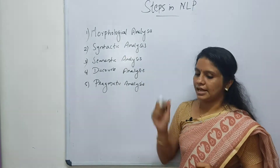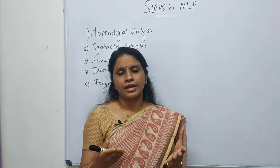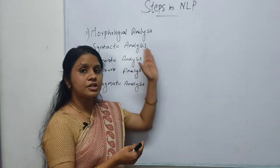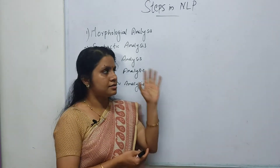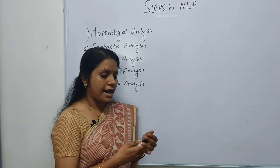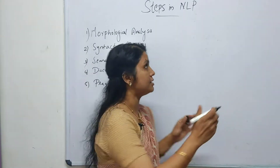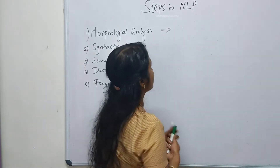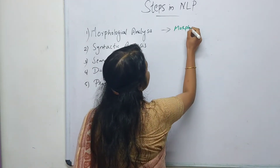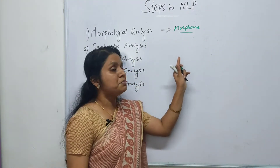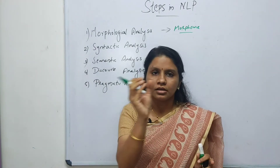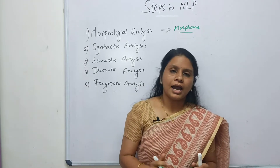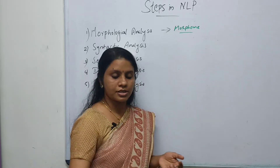First is morphological analysis. Morphology is the study of the structure and formation of words — it is a word-level analysis. The most basic unit is called a morpheme, which represents the minimal unit of meaning. For example, the word 'unhappy' contains two morphemes: 'un' and 'happy'.